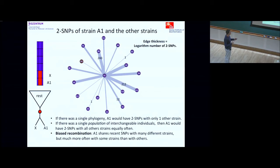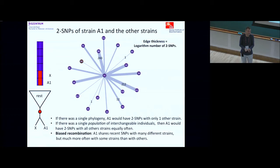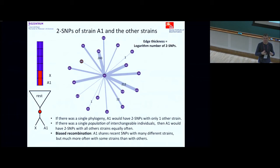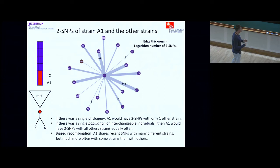A pair-SNP like this says that in that part of the genome, A1 and A11 are nearest neighbors in the phylogeny, and the mutation happened on the branch leading to their common ancestor. If there was only one tree, there would be only one partner — you can only be a nearest neighbor with one other strain — so all SNPs of that type would be with one strain. We clearly don't have that: A1 can be nearest neighbor with many different strains in different parts of the genome. But if you were randomly swapping, you'd expect every other strain equally often — that's also not what we find.